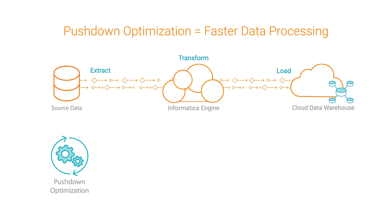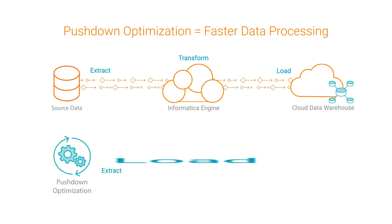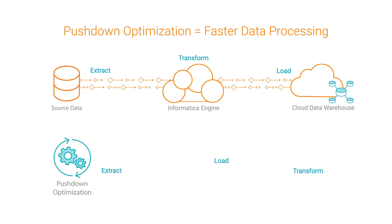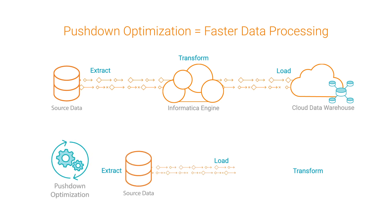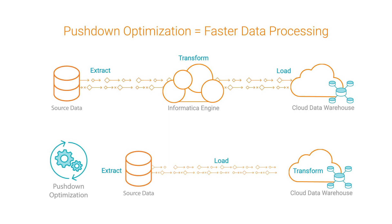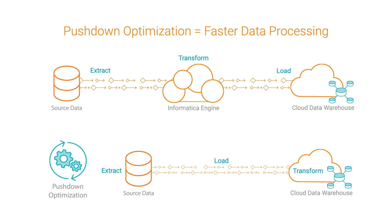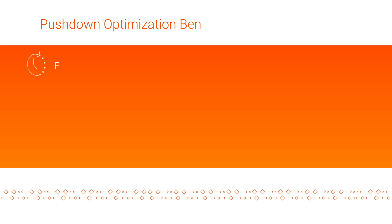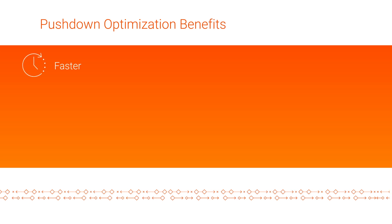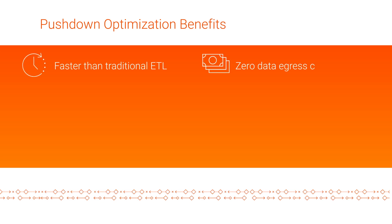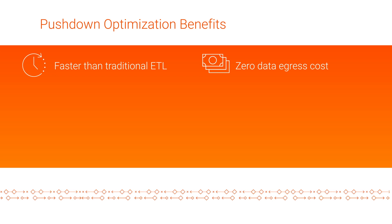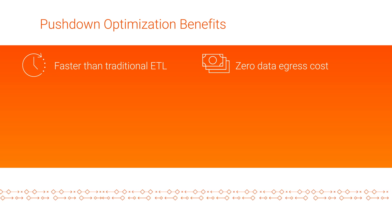Here, instead of ETL, you use Extract, Load, Transform, or ELT, to extract your source data, load it to a Cloud Data Warehouse using the Informatica engine, and then transform it in the Cloud Data Warehouse. With Pushdown Optimization, your data processing is up to 20 times faster than traditional ETL, and there's no data egress cost since your data stays in your underlying cloud infrastructure.